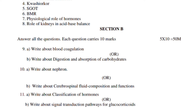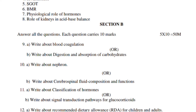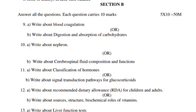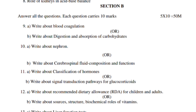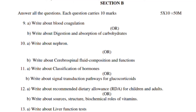Question 11: write about the classification of hormones. Question 11 (alternative): write about signal transduction pathways for glucocorticoids. Question 12: write about recommended dietary allowances for children and adults. Question 12 (alternative): write about sources, structure, and biochemical roles of vitamins.